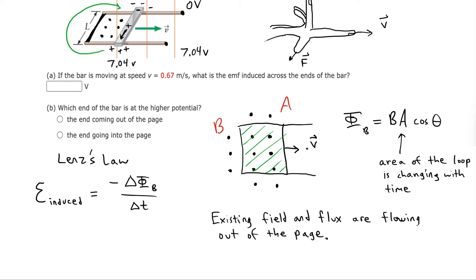Right now, if the bar were to just move to the right, then that flux out of the page would be increasing, because the area would be getting bigger. So if the area gets bigger and the flux gets bigger, but Lenz's law says that the current will not allow that to happen. What will happen is there'll be a current induced in the wire in order to stop the change.